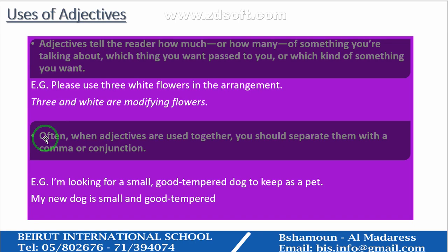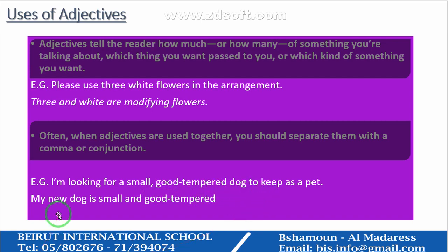Often when adjectives are used together, you should separate them with a comma or conjunction. For example: 'I am looking for a small, good-tempered dog to keep as a pet', or 'My new dog is small and good-tempered.' When using two or more adjectives together, we must put a comma or a conjunction to separate them.